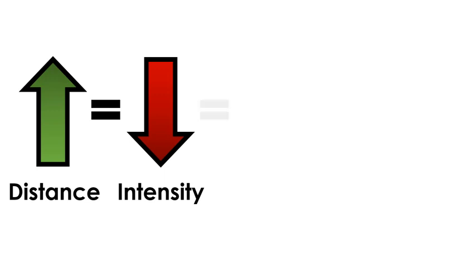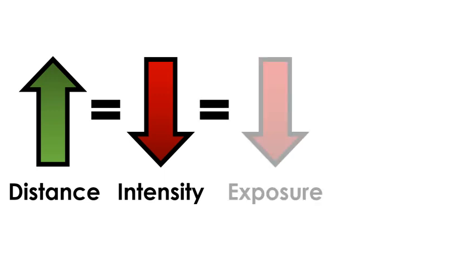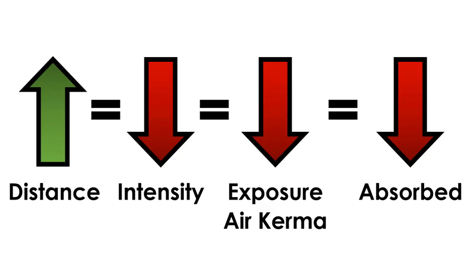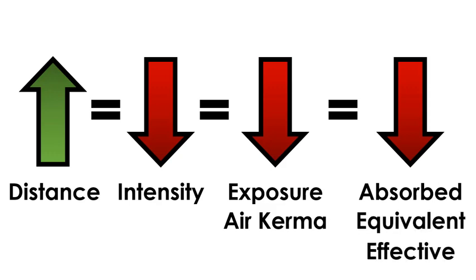We could also change the distance and the result is different. If we increase the distance between the person and the x-ray source, this is going to result in a decrease in the intensity of the x-ray beam according to the inverse square law, which then will result in a measurable decrease in the exposure and air kerma, and if those things are decreasing, the absorbed dose, the equivalent dose, and the effective dose also all decrease.